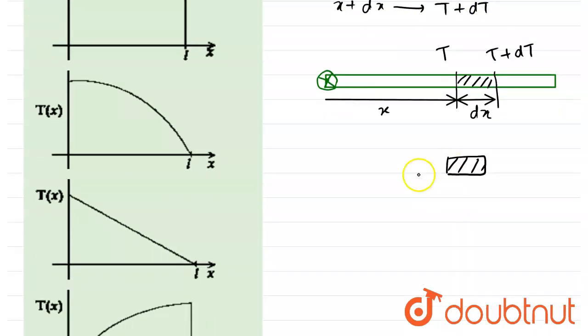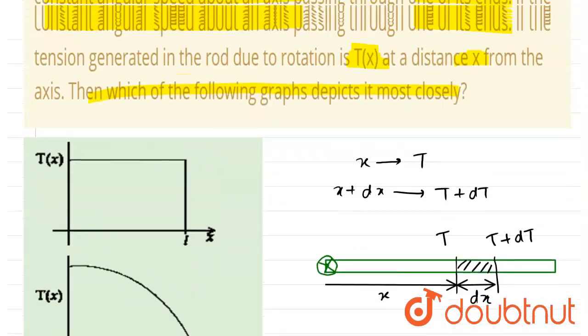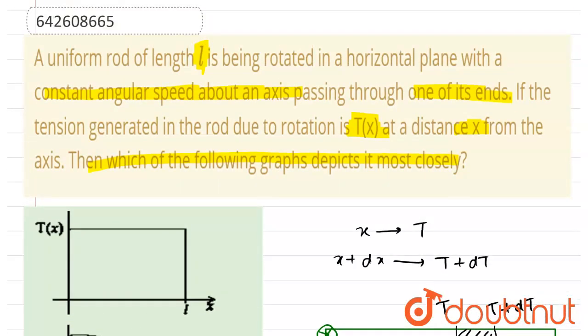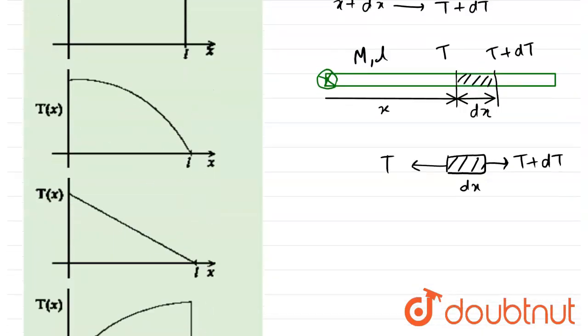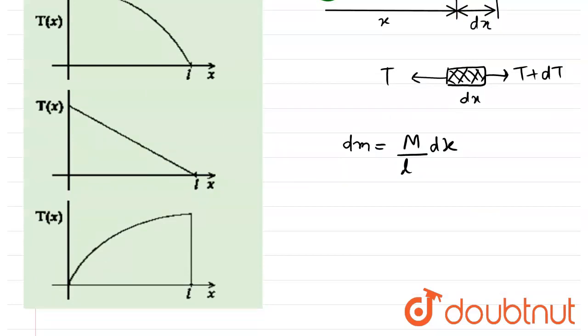Now if you see this small element, T will act in this direction and T+dT will act in this direction. Let's suppose the mass of this rod is M and length is l. From the unitary method we can calculate the mass for this small element. Since l length has mass M, then dx length will have mass M/l times dx. Now we have the mass of this small element.